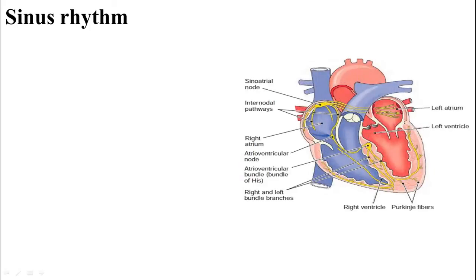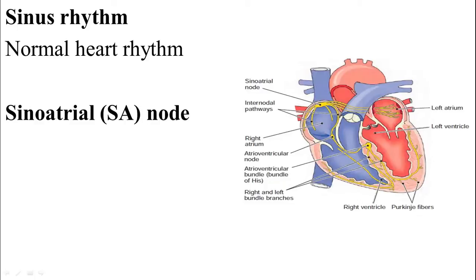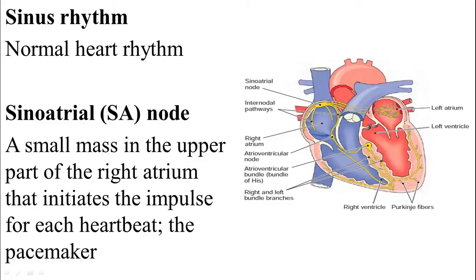A sinus rhythm means a normal heart rhythm. The sinus rhythm is the rhythm of the sinoatrial node — the natural pacemaker located near the opening of the superior vena cava. It can produce a sinus rhythm of 60 to 100 beats per minute. The sinoatrial SA node is a small mass in the upper part of the right atrium that initiates the impulse for each heartbeat.